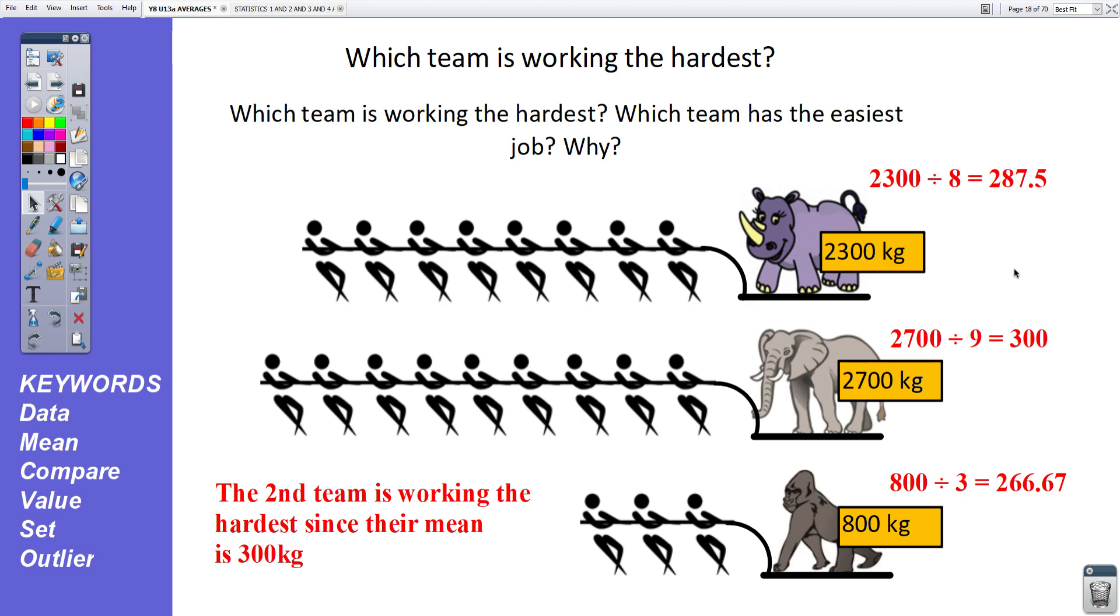Okay, well, it's a case of working out the mean. Here we've got eight people pulling the rhino. 2,300 divided by eight means that each person is pulling a mean of 287.5 kilograms. For the elephant, 2,700 divided by nine men. Each person's pulling 300 kilograms. And for the gorilla, 800 kilograms divided by three people. Each person is pulling a mean of 266.67 kilograms. So the second team is working the hardest, since their mean is 300 kilograms. Third team is working the easiest, since they're only having to pull 266.67 kilograms.